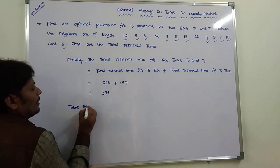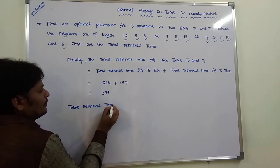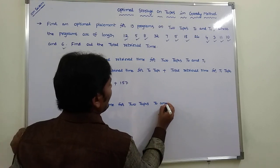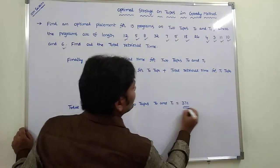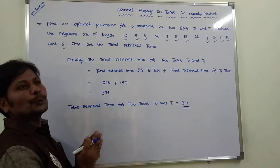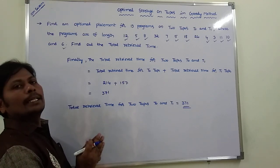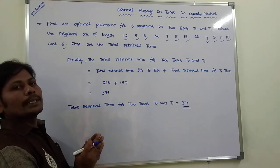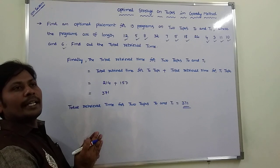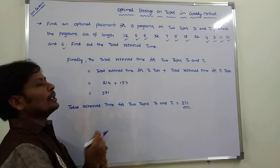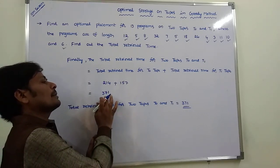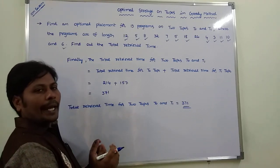To summarize: 13 programs are placed on two tapes T0 and T1. After assigning the programs to the two tapes, the total retrieval time for T0 is 214, the total retrieval time for T1 is 157, and the total retrieval time for both tapes is 371. Thank you for watching this video. If you like this video, please subscribe to the channel: Develop Srinivasarao.